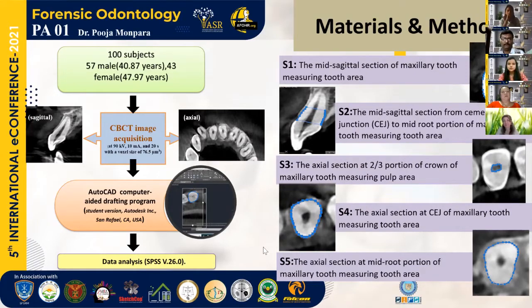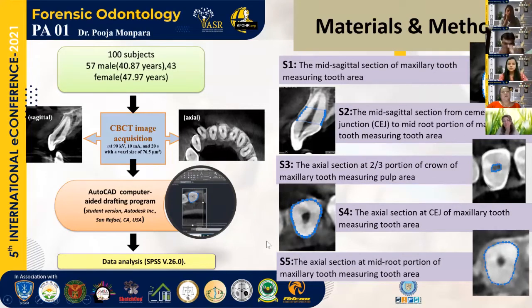After acquiring the CBCT images, I inserted these 2D images into AutoCAD computer drafting software, where I drew a minimum of 10 points around the pulp space and 30 points around the tooth area. Then I measured the area of the tooth and the area of the pulp, calculated the PTR (pulp-tooth area ratio), and finally performed data analysis using SPSS software.